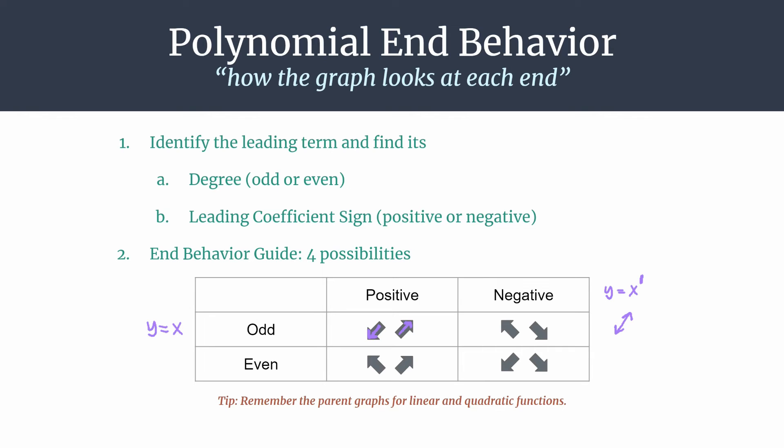And then if you were to look at the negative scenario for end behavior, we can remember the graph of y equals negative x. And that's just the vertically flipped linear parent graph. So we know that graph looks like that. And notice how the arrows are up on the left and down on the right if we have an odd degree and a negative leading coefficient. So if you know that basic linear function and its negative, then you know these two cases.